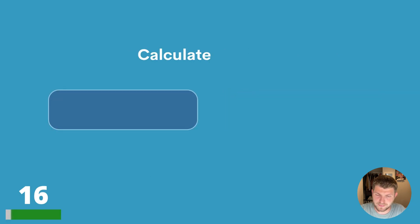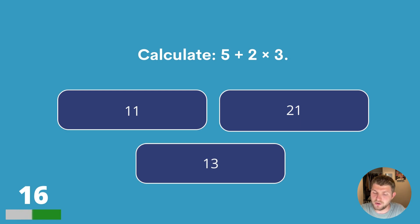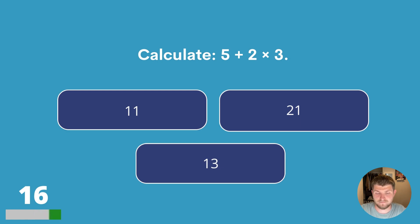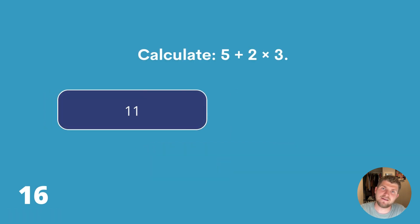Question sixteen. Calculate 5 + 2 × 3. Is it eleven, twenty-one or thirteen? The answer is eleven.